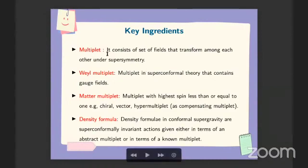Now, I would like to lay out some of the terminology that I will be using going forward in this talk. So multiplet is nothing but the set of fields that transform among each other under supersymmetry. Weyl multiplet is a multiplet in superconformal theory that contains gauge fields like gravitini and graviton. Matter multiplet is a multiplet with highest spin less than or equal to 1. For example, chiral multiplet, vector multiplet, or hypermultiplet, they're also known as compensating multiplets. And the reasons for it will be clear later on this talk. And density formula in conformal supergravity are superconformally invariant action given either in terms of an abstract multiplet or in terms of known multiplet, such as vector multiplet or chiral multiplet.